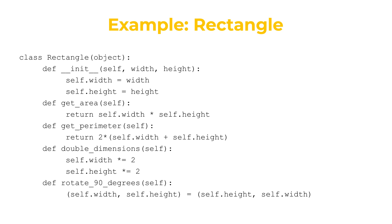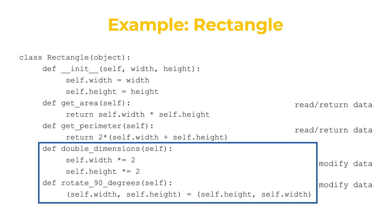There are typically two categories of methods. One category reads and returns information about the object. So the first two methods here are in this category. The second category modifies the object. The last two methods are in this category. Note that the last two methods don't return anything. This is because classes we create are, by default, mutable. And so our methods here are destructive.